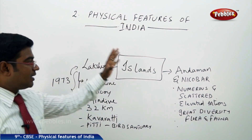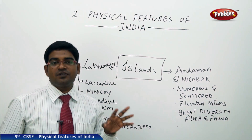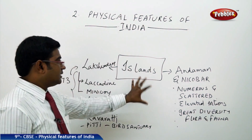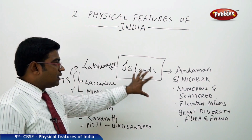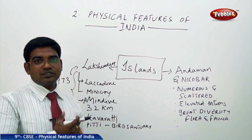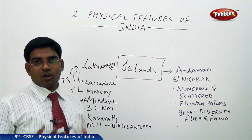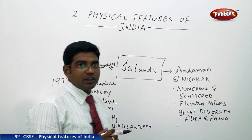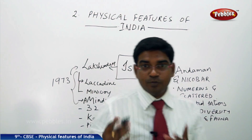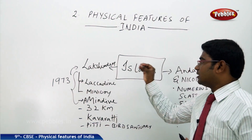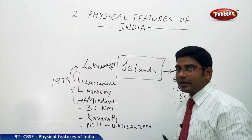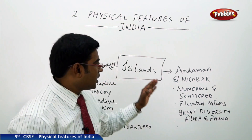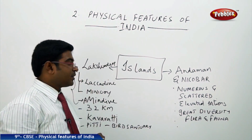Now let us move on to the last major physical division of India, that is the islands. An island is a landmass which is surrounded by water on all sides. We have two major groups of islands: one is the Lakshadweep Islands and the other is the Andaman and Nicobar Islands.